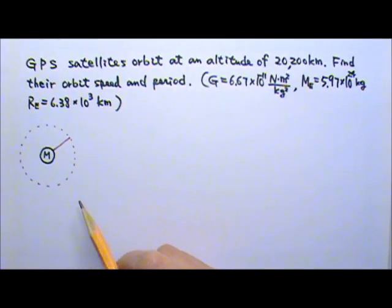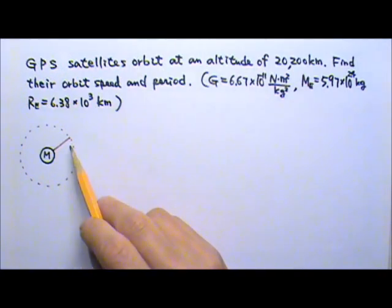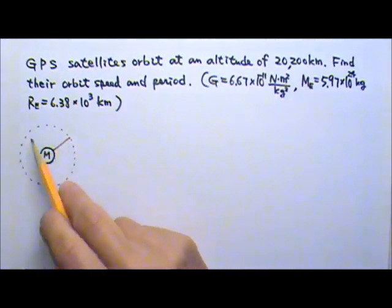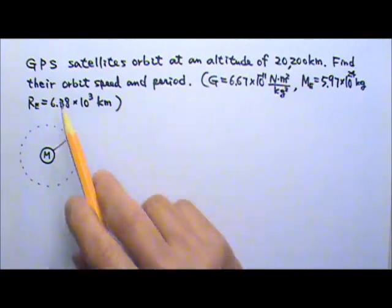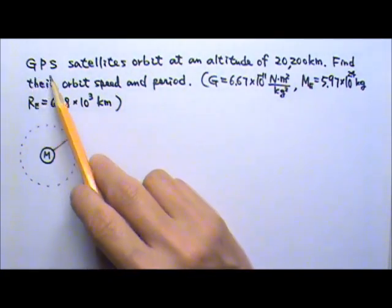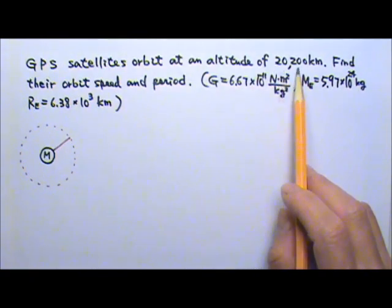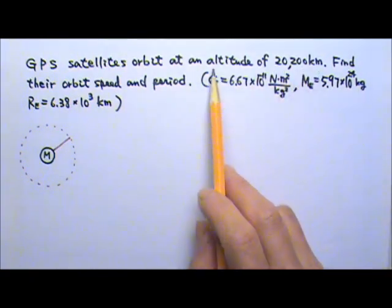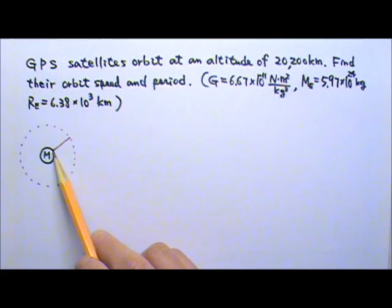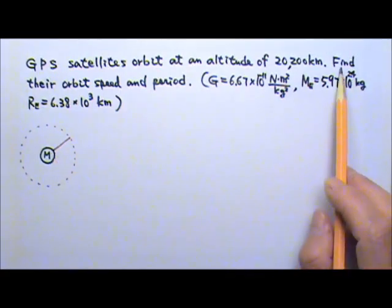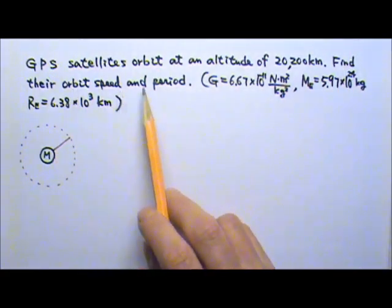Let's look at the problem involving either a planet orbiting around the Sun or a Moon or satellite orbiting around a planet. In this problem, it says GPS satellites orbit at an altitude of 20,200 kilometers. And altitude is the distance measured from the surface of the ground. Find their orbit speed and the period.